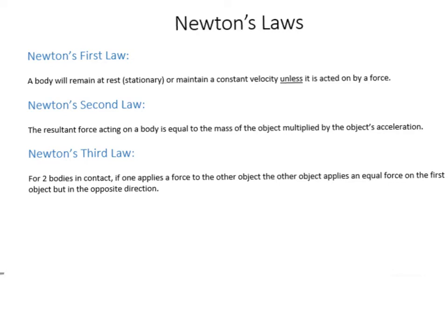Newton's second law is the one most people have heard of before: a resultant force acting on a body is equal to the mass of the object multiplied by its acceleration. So essentially, if you apply a resultant force to an object it will accelerate, and you can calculate the relationship between those using the mass.